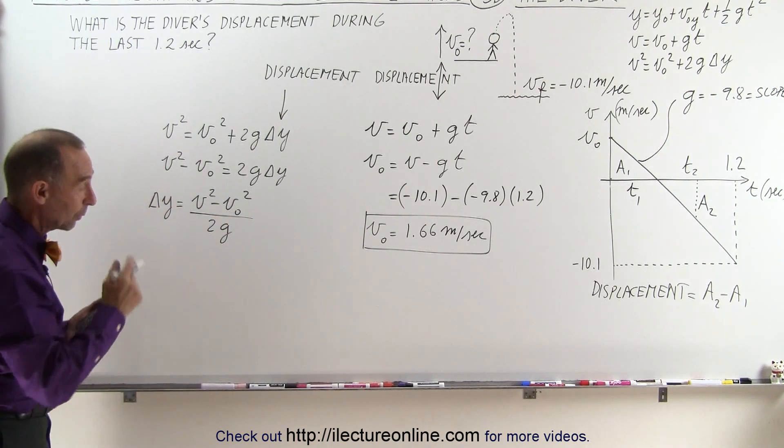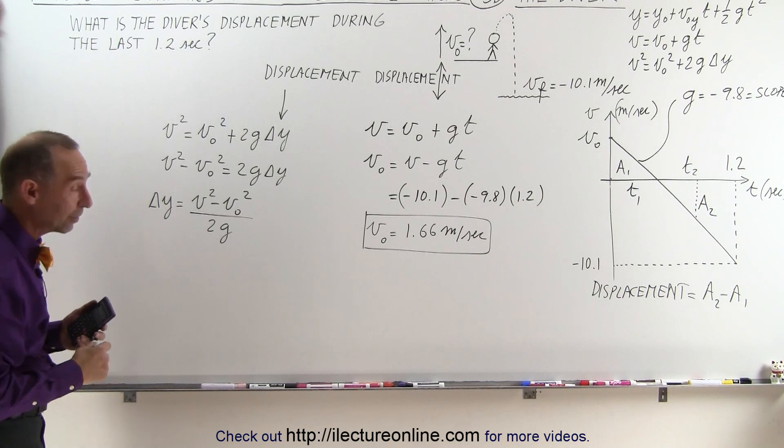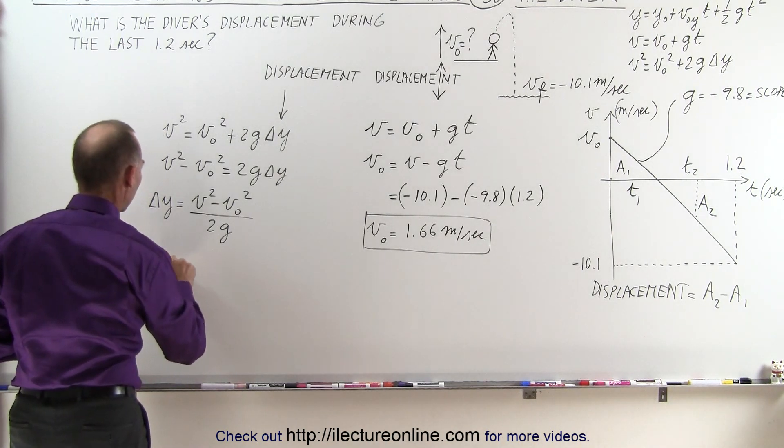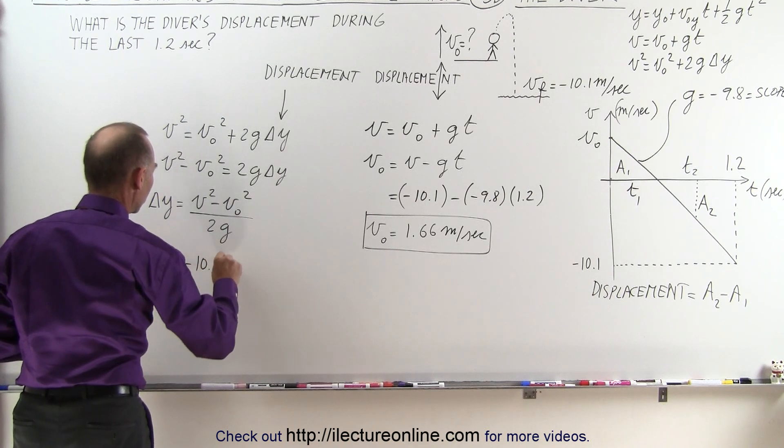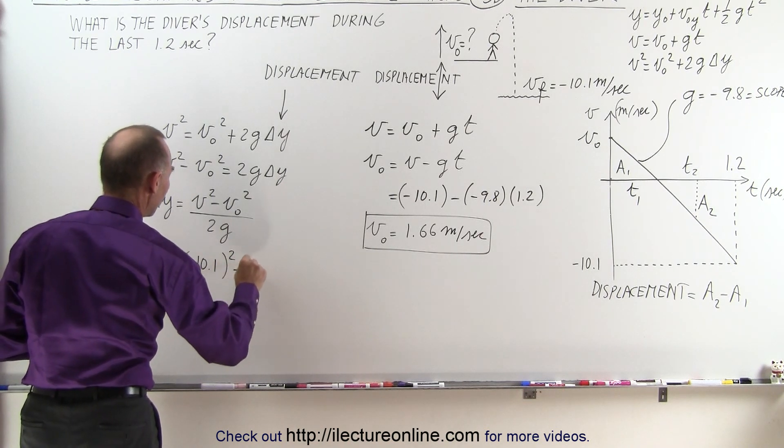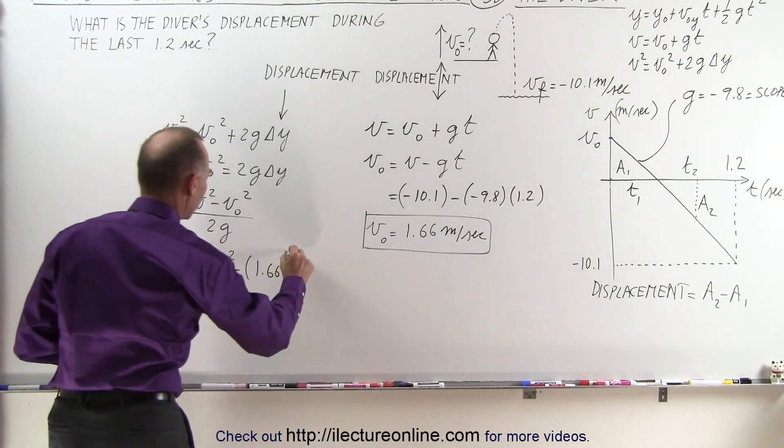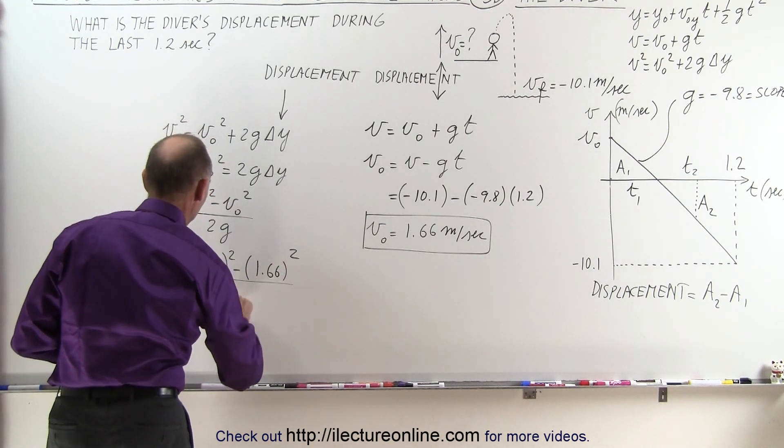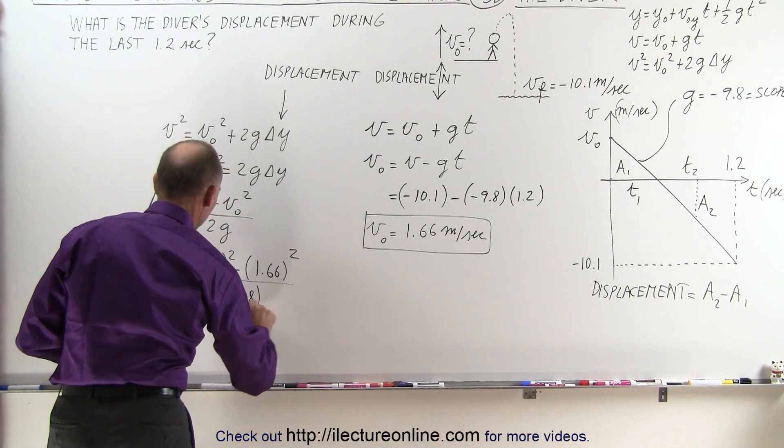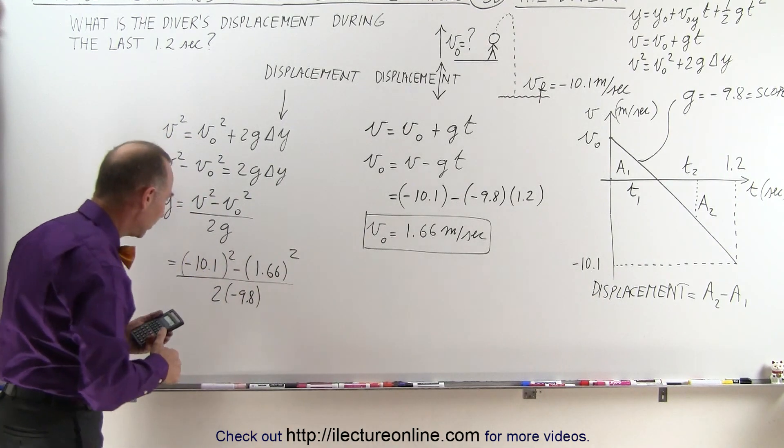Remembering that g, of course, with the equations of kinematics, is going to be minus 9.8. So this becomes minus 10.1 squared minus 1.66 squared, all divided by 2 times the minus 9.8. And let's see what that is equal to.